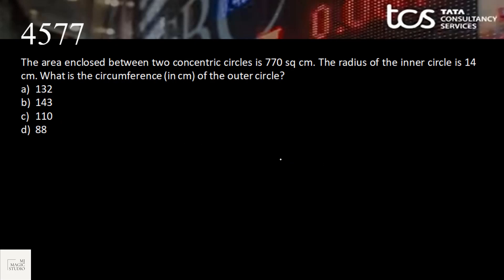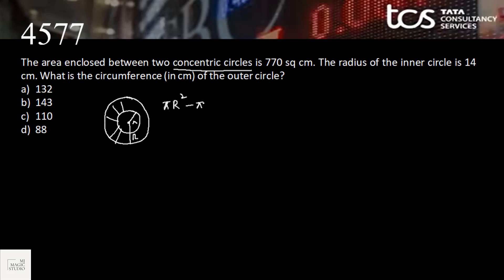Now we have circles. The area enclosed between two concentric circles — same center, small radius r and large radius R — equals the area of the outer circle minus the area of the inner circle: πR² − πr² = 770. The radius of the inner circle is given as 14, so small r = 14.